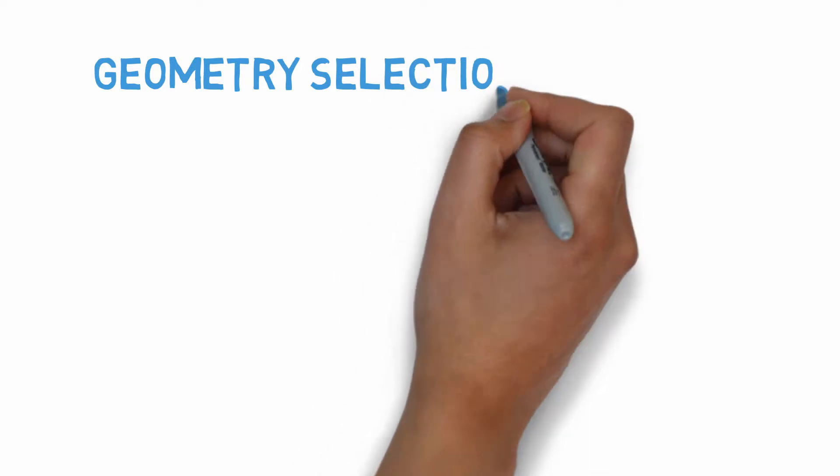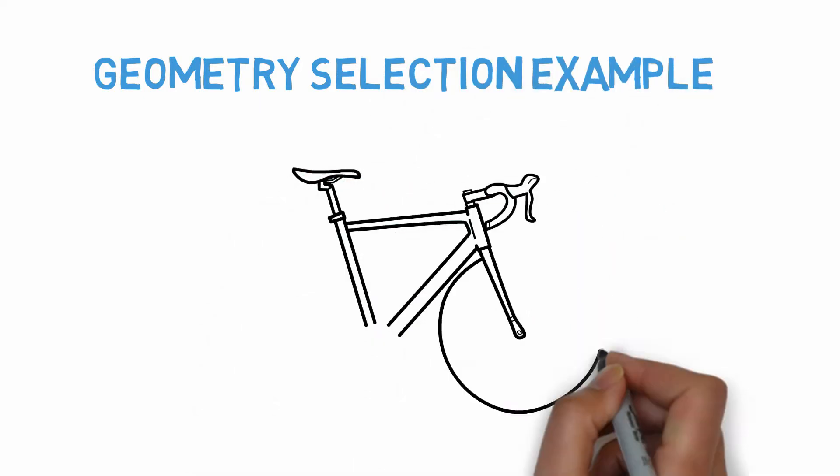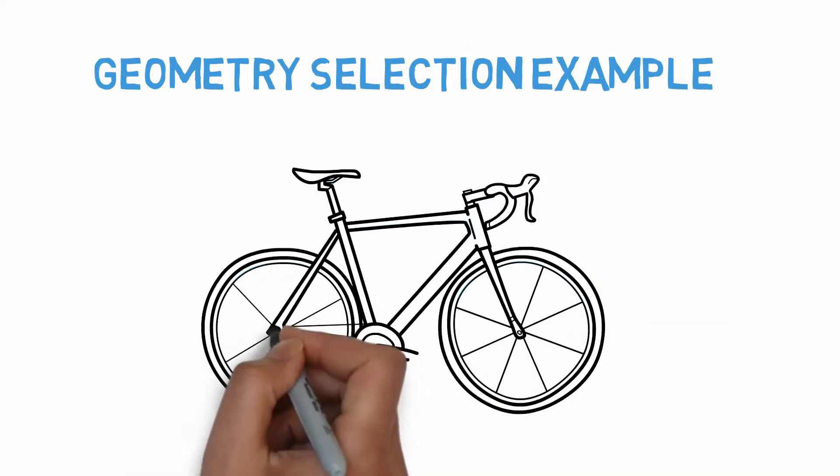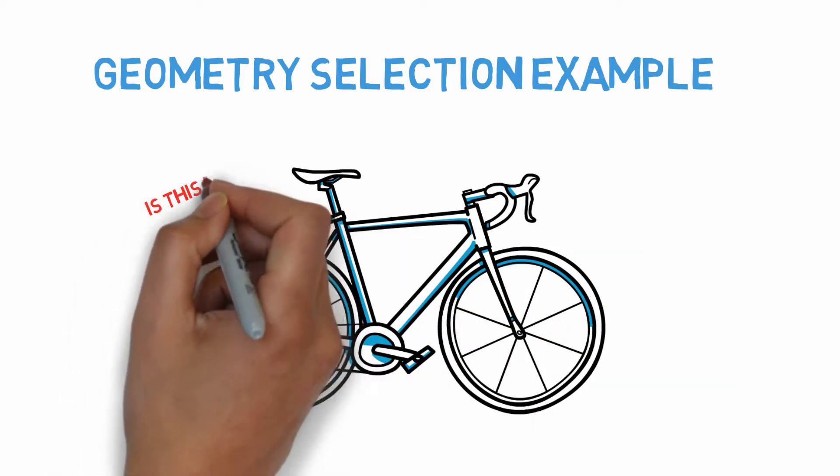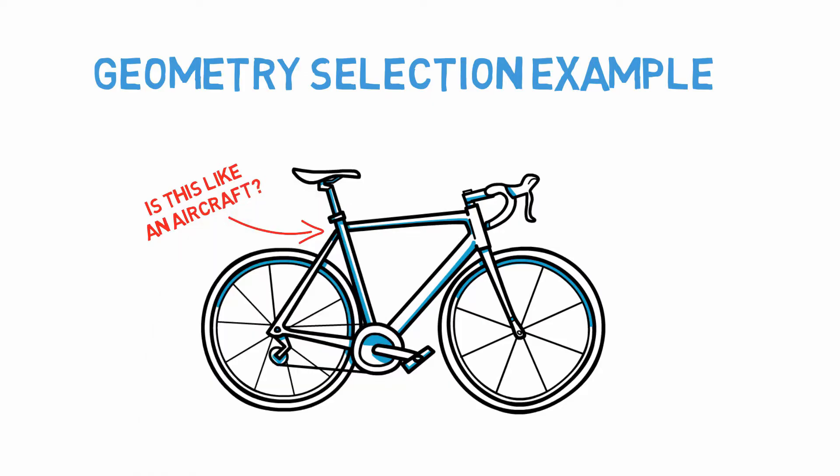Let's take a closer look at selecting a geometry by considering a simple example, a bicycle frame. Now, you may think a bicycle frame is not really an aerospace structure, but in fact, aircraft in the past have had tubular frame structures.